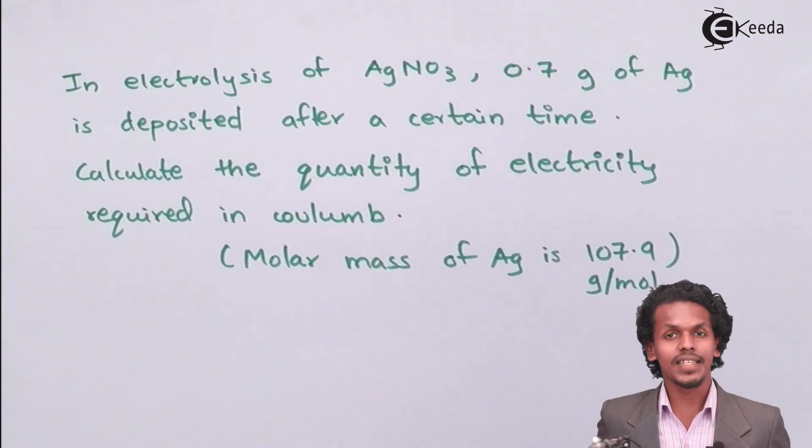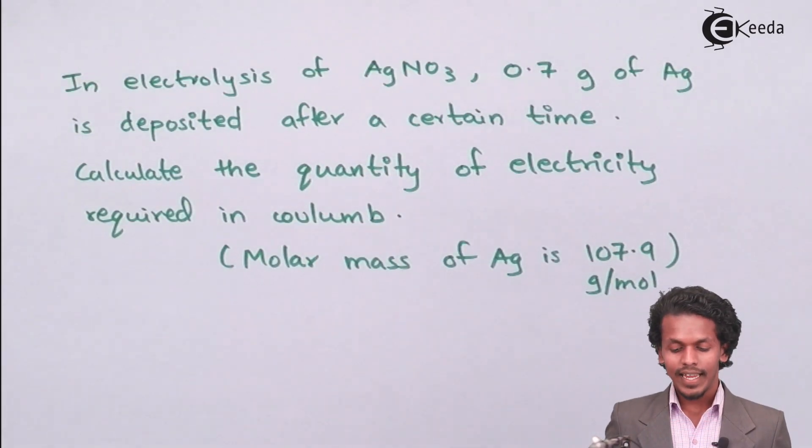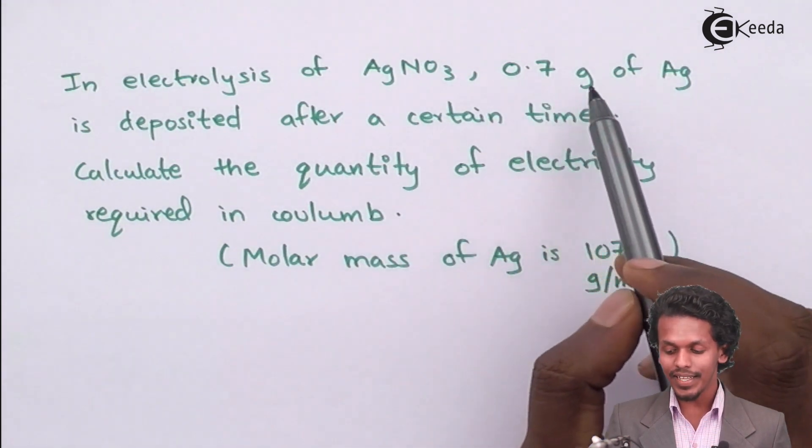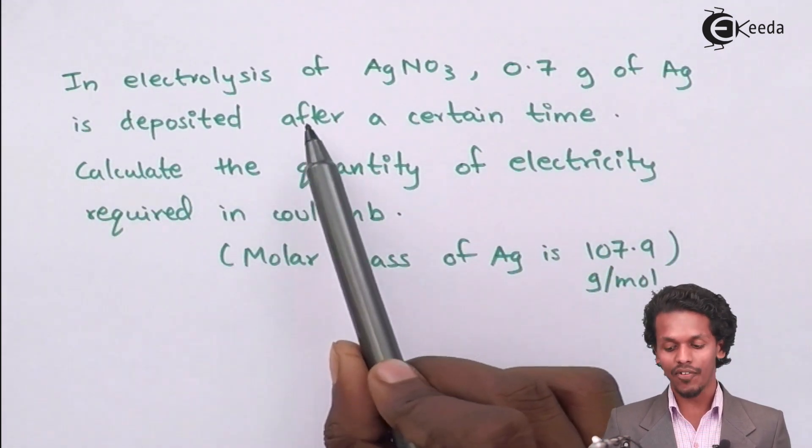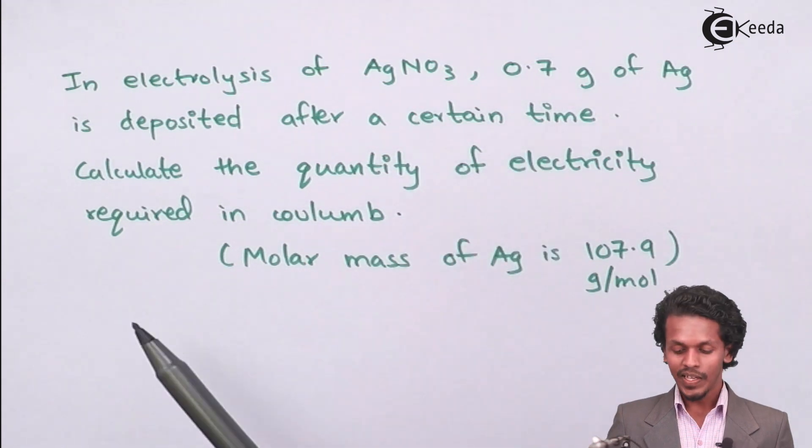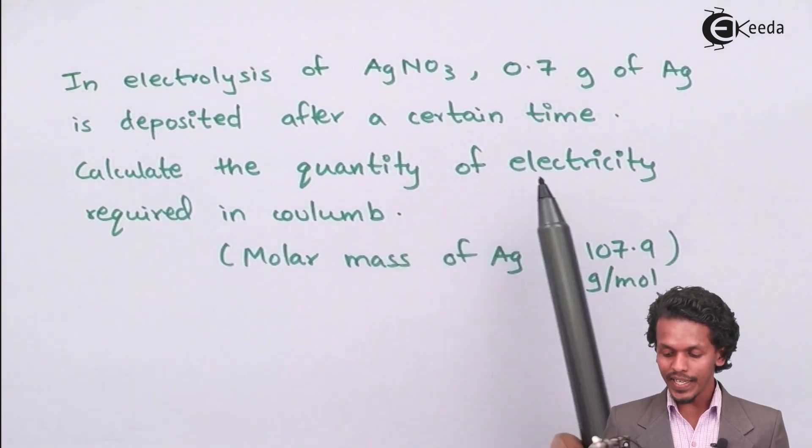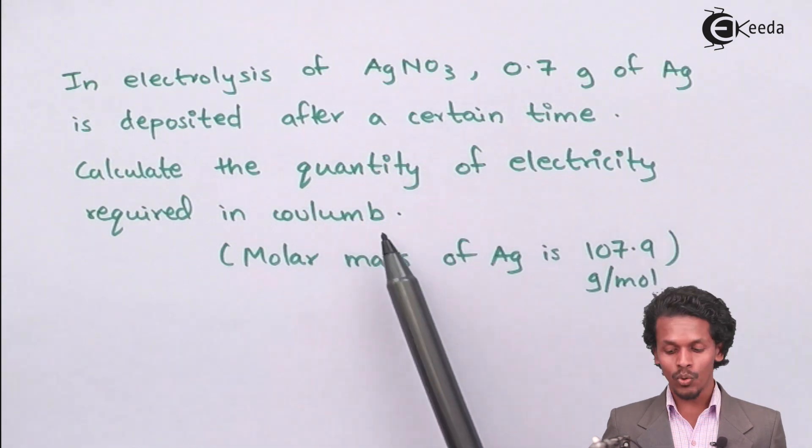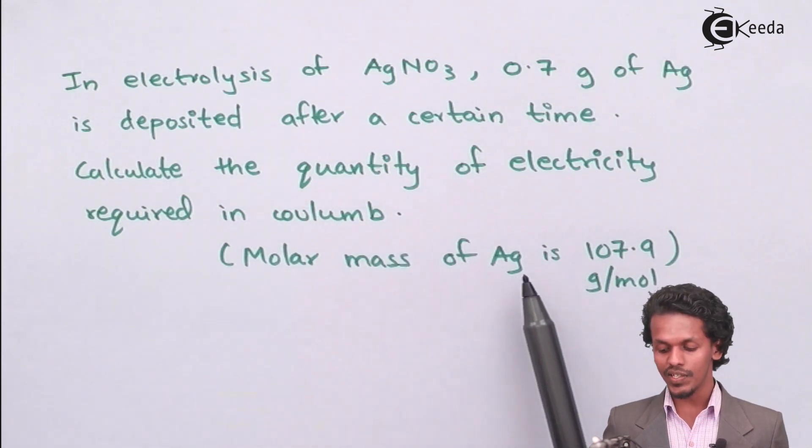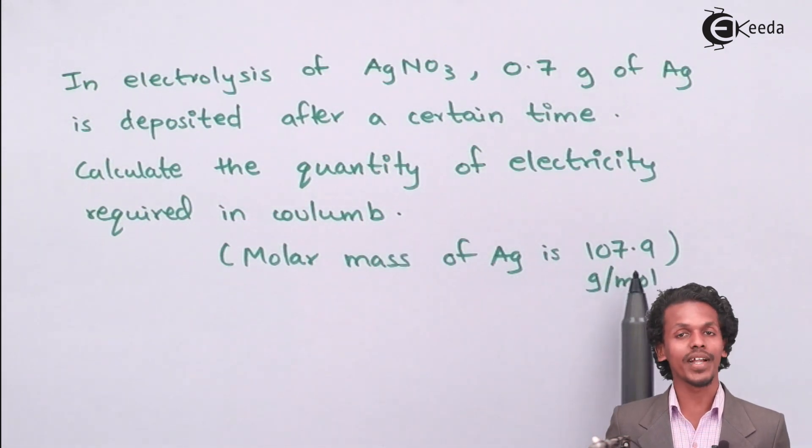As mentioned in the above question, in electrolysis of AgNO3, 0.7 gram of Ag is deposited after a certain time. Calculate the quantity of electricity required in coulomb if the molar mass of Ag is given as 107.9 g/mol.